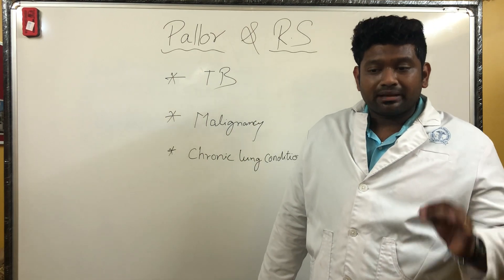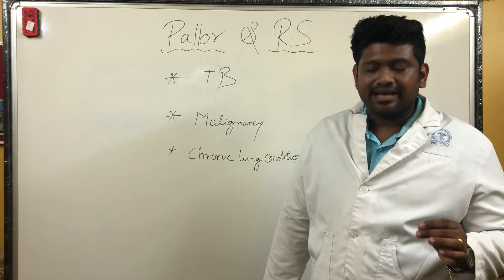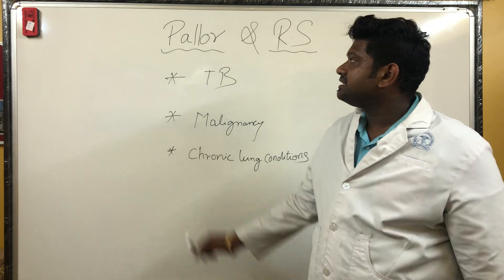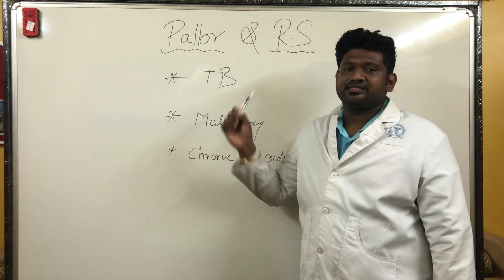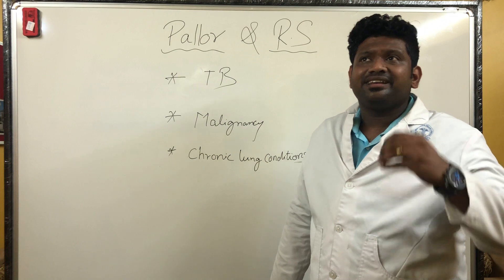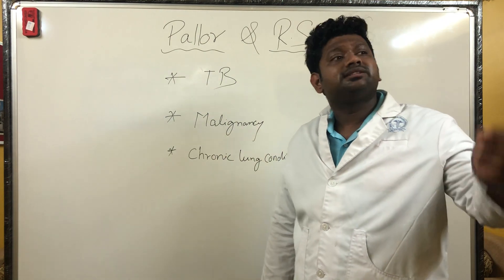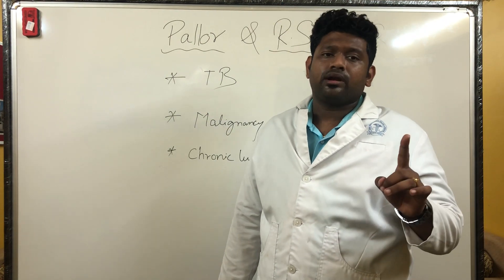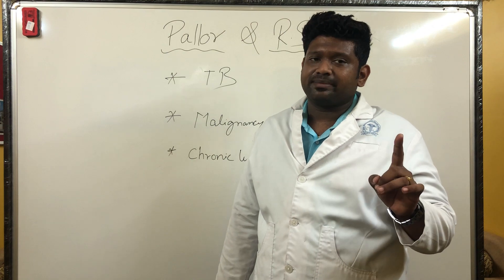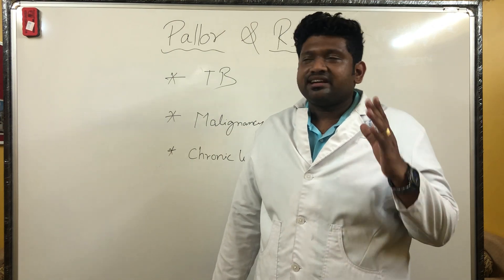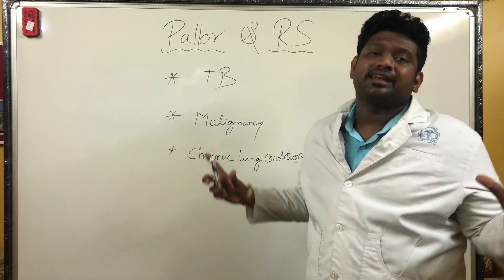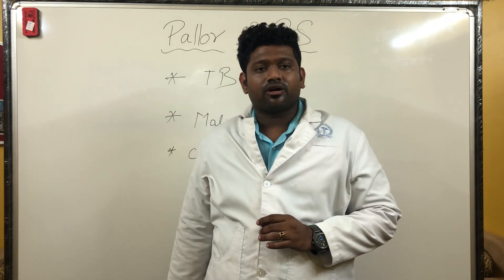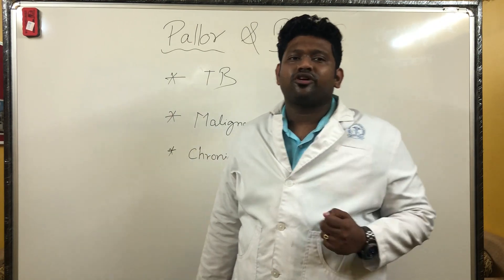From a pulmonologist's point of view, my topic is pallor and the respiratory system. What respiratory diseases should you suspect when a patient presents with pallor? Number one — we must think about chronic lung diseases. You should know that iron deficiency anemia in Robbins pathology is listed under microcytic hypochromic anemia differential diagnoses.